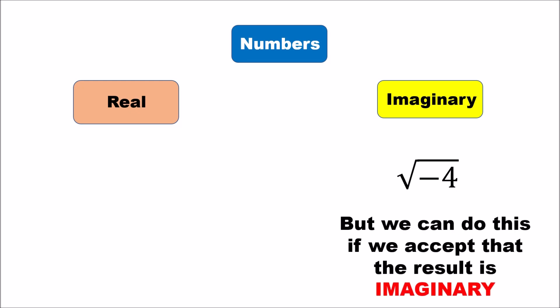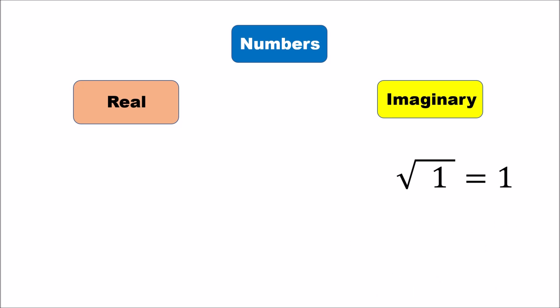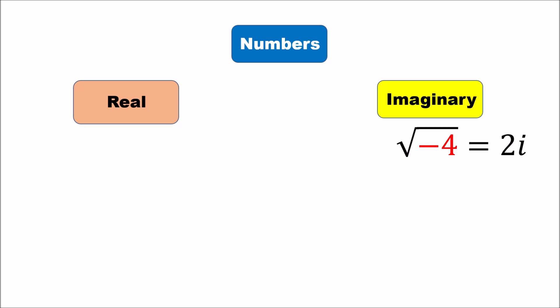We can take a square root of negative four, but we'll have to assume the result is imaginary — it's not going to be a real number. The square root of one is one, and we assume the square root of negative one is lowercase italic i — that's the symbol we use. So the square root of negative four equals two i.